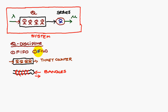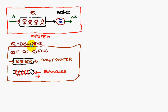For first-in-last-out, consider bangles on a hand. The first bangle is placed on the hand, then the second, third, fourth, and fifth. When removing, the first bangle can only come off after all the other four bangles are removed. Therefore the first bangle is first-in but last-out. This is called queue discipline.